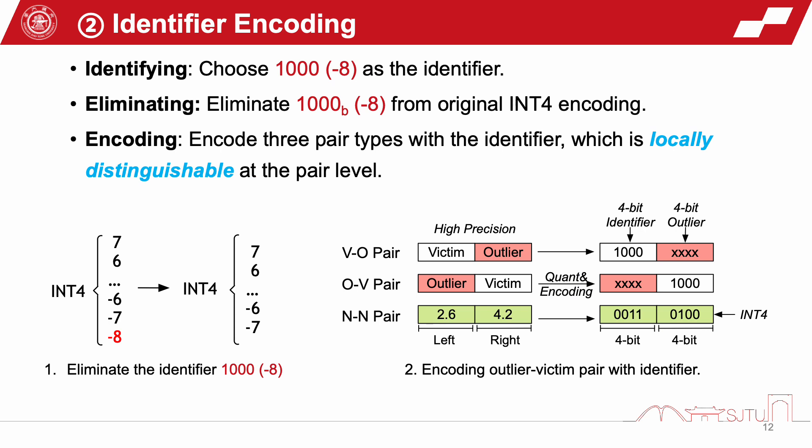This is the identifier encoding. First, we choose 1-0-0-0 as the identifier, and encode three types of pairs with the identifier to make them locally distinguishable.